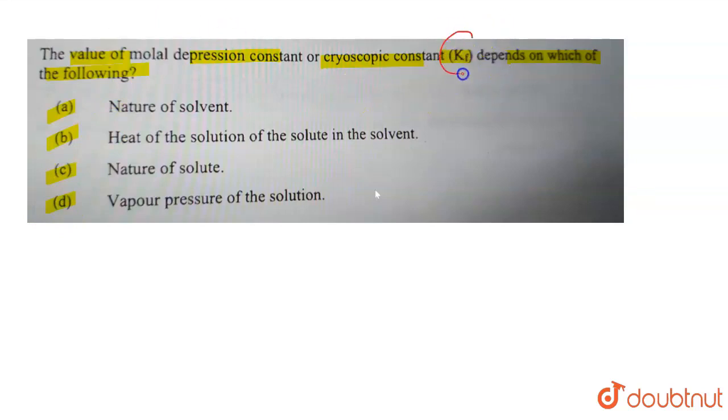How do you define this Kf, which is the cryoscopic constant? It is defined as the depression in freezing point. Delta Tf is actually proportional to the molality of the solution.